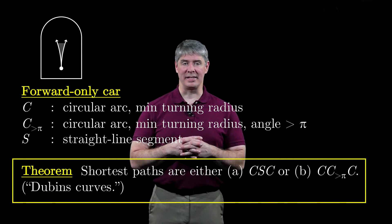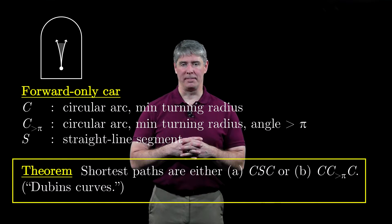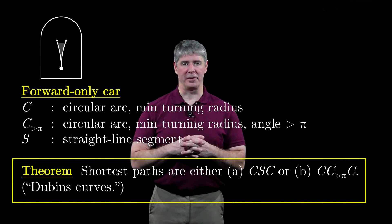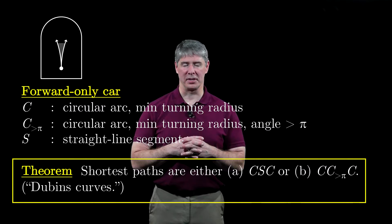Where any of the C or S segments could be of length zero. These are called Dubin's curves in honor of the mathematician who proved this result.